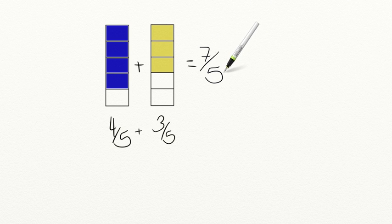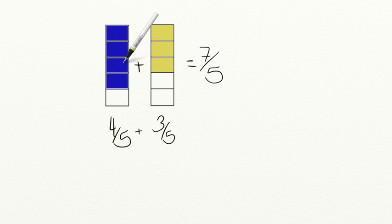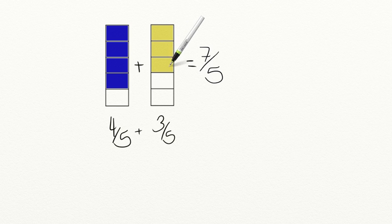We can check our work by counting the fifths in our picture: one, two, three, four, five, six, seven-fifths. That confirms our answer.